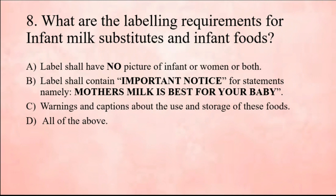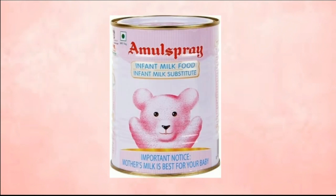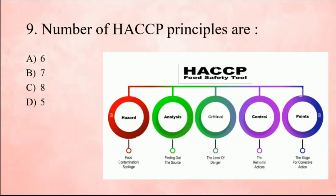Next question: What are the labeling requirements for infant milk substitutes and infant foods? Under FSS Act 2006, the label shall have no picture of an infant, woman, or both. The label shall contain the important notice: 'Mother's milk is best for your baby' — this statement was added just recently. Warnings and cautions about the use and storage of these foods should also be mentioned on the label. The correct answer is all of the above.